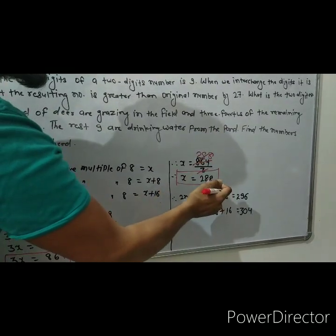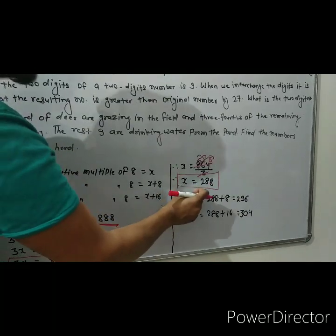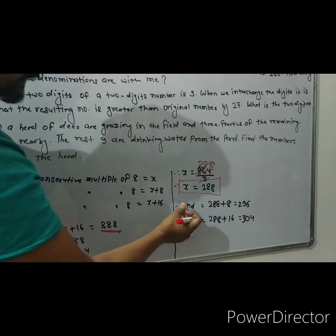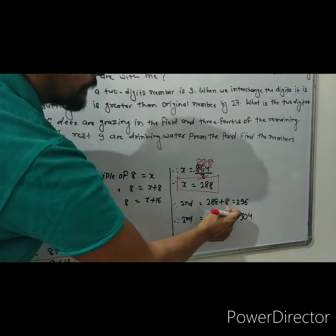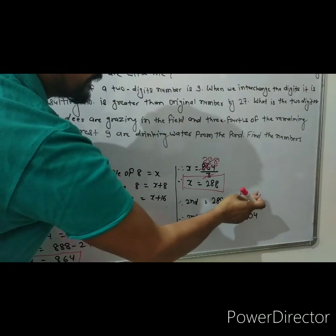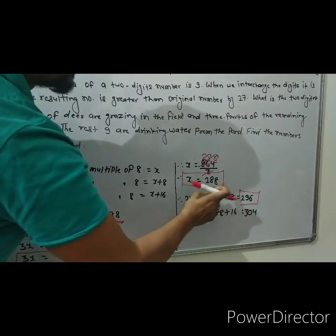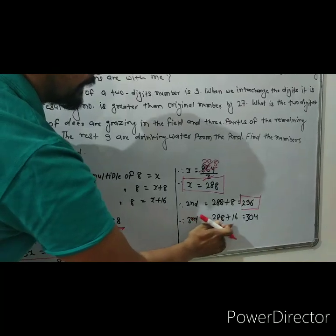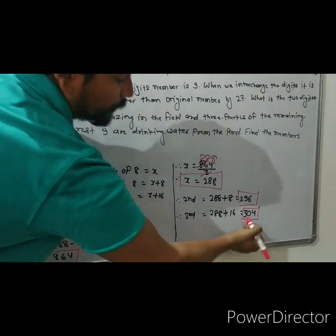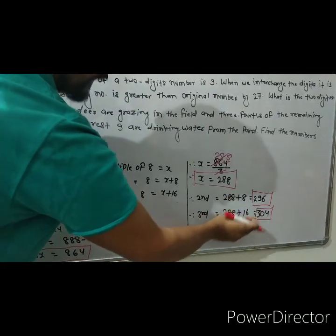When we add 8 to the first multiple, we get the second multiple of 8. So 288 plus 8 is equal to 296 — that is the second multiple of 8. And 288 plus 16 gives 304, which is the third consecutive multiple of 8.